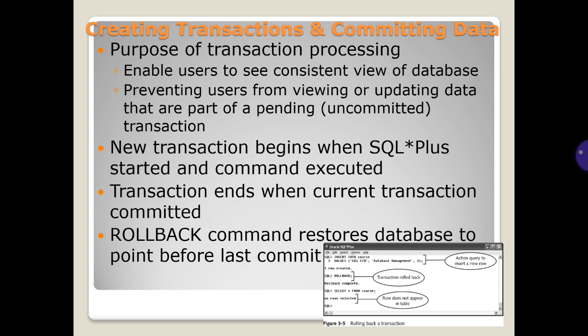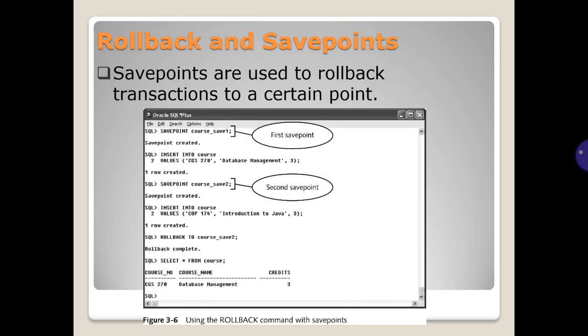Creating transaction and committing data. Purpose of transaction processing: enable users to have a consistent view of database, preventing users from viewing or updating data that are part of a pending, uncommitted transaction. New transaction begins when SQL Plus is started and command executed. The transaction ends when current transaction is committed. Rollback command restores database to point before last commit. Rollback and save points: save points are used to rollback transaction to a certain point.